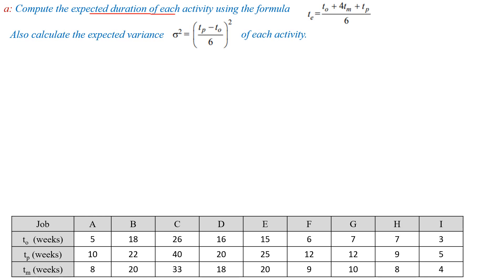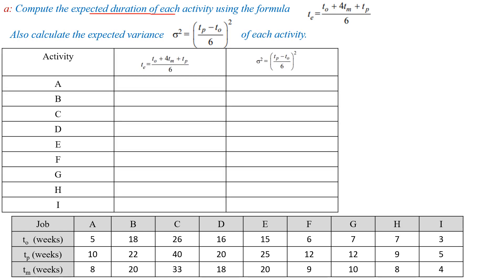First, we calculate Te and sigma² for activity A. Te = (T0 + 4Tm + Tp) / 6. For activity A, T0 = 5, Tm = 8, and Tp = 10. So Te = (5 + 4×8 + 10) / 6 = 7.8. For activity B, Te = (18 + 4×20 + 22) / 6 = 20.